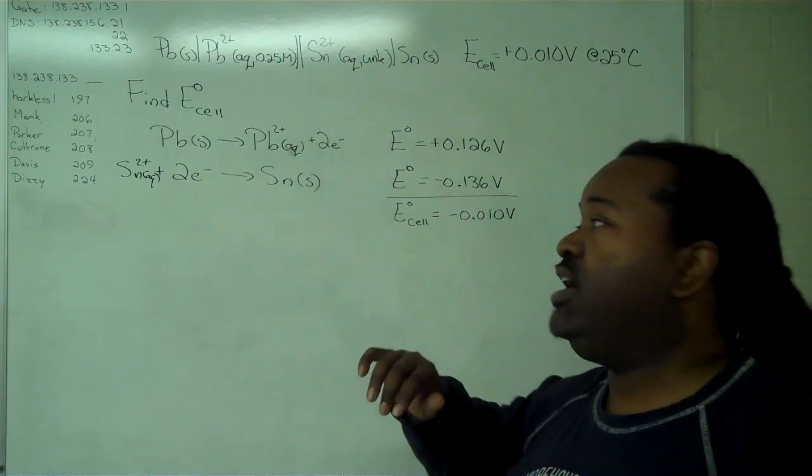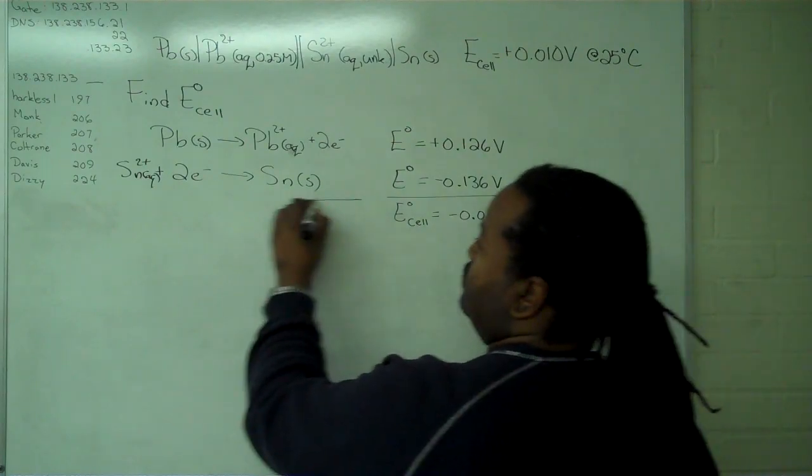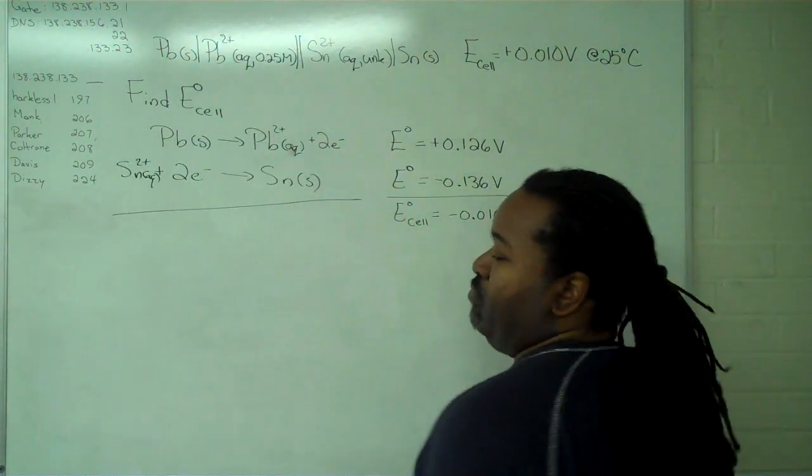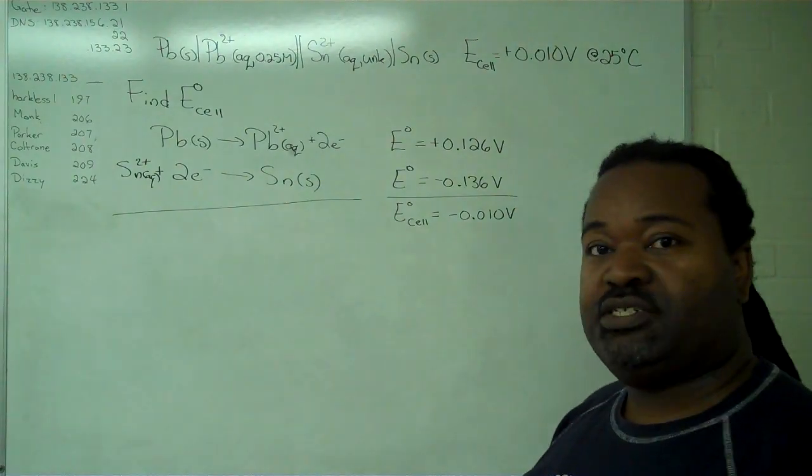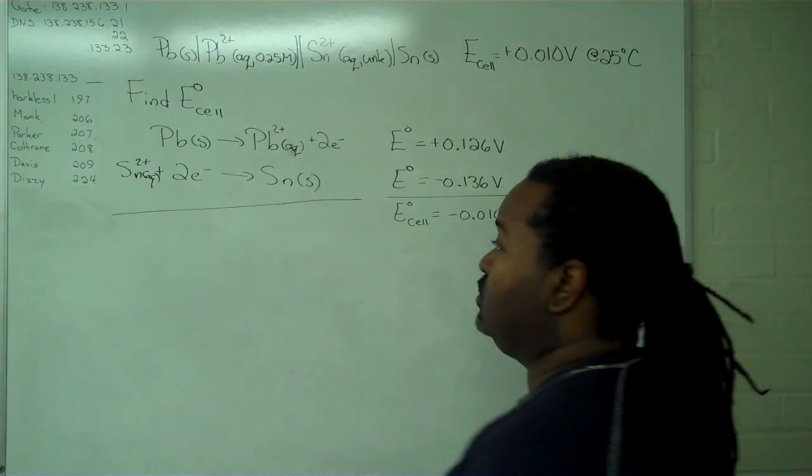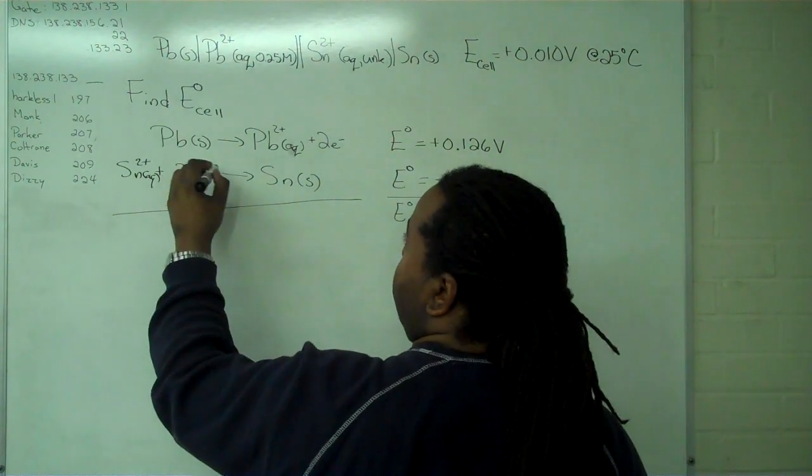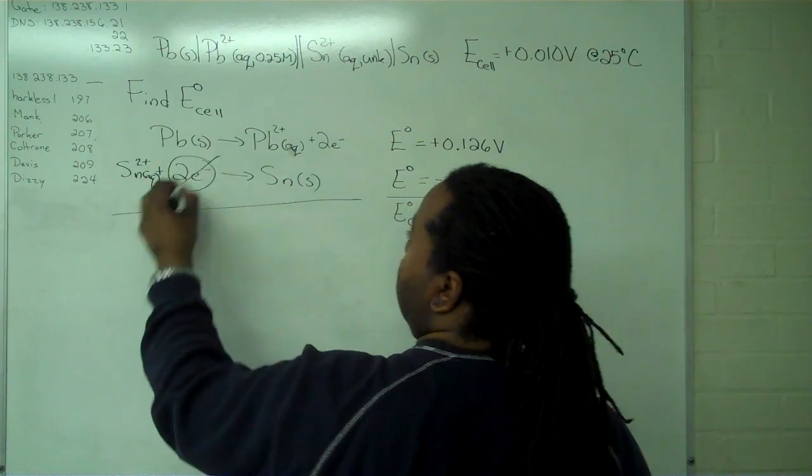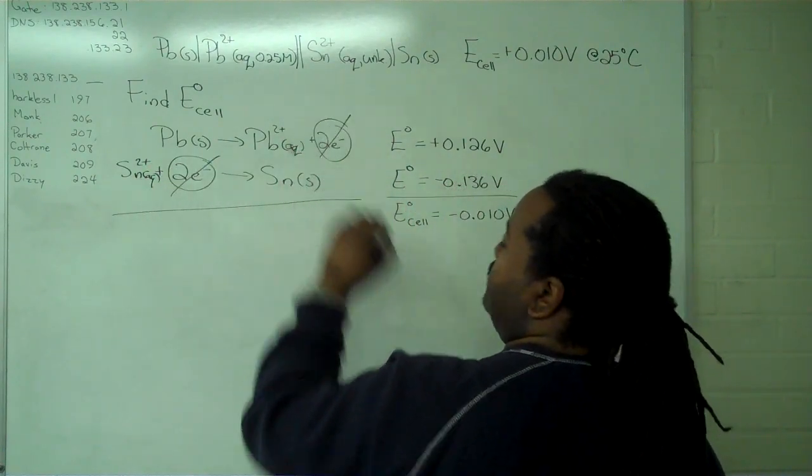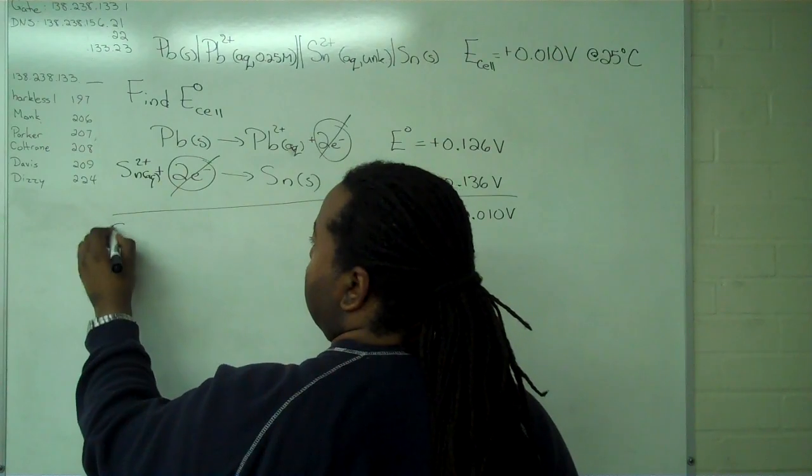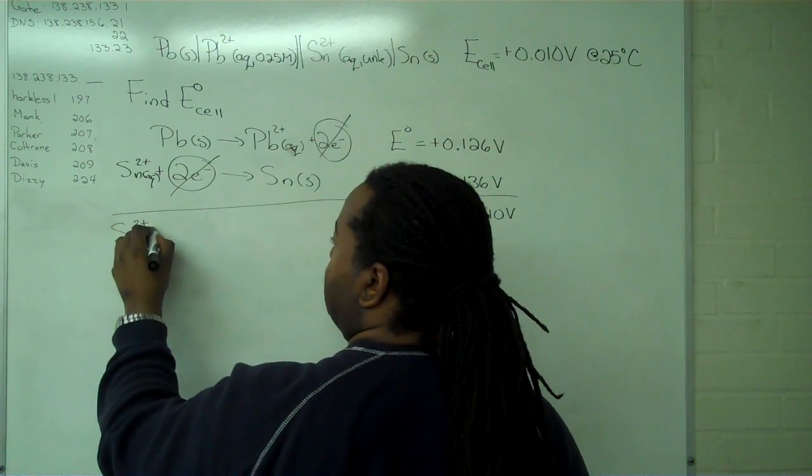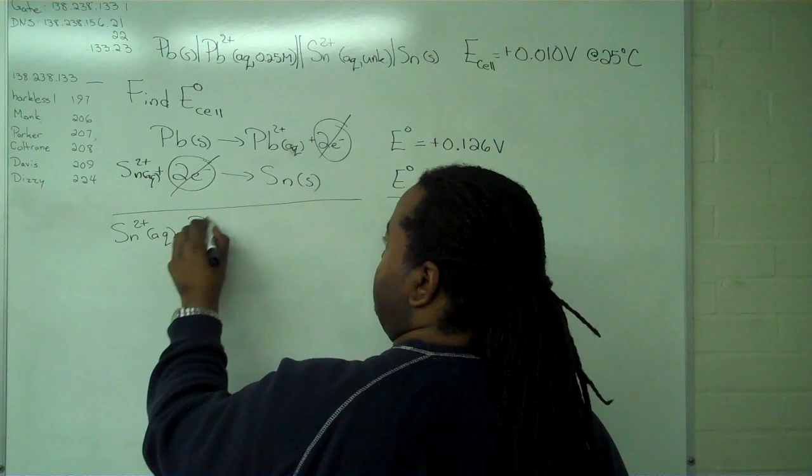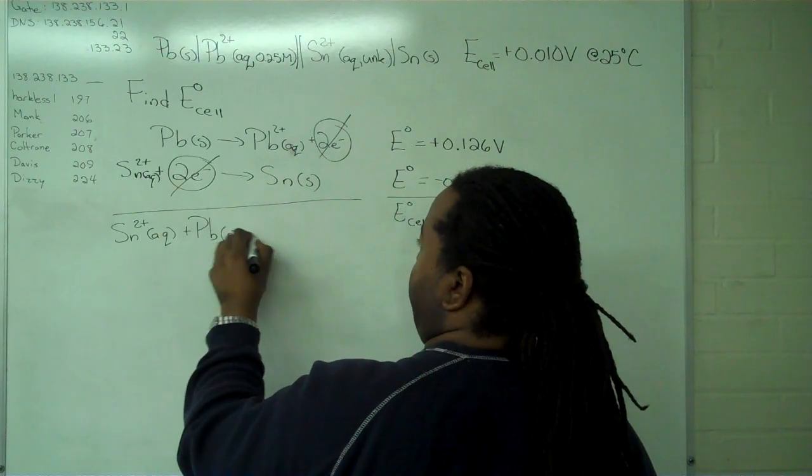Now that we've found E cell standard, the next step is to combine these to get our overall reaction so we can have an expression for Q. This is fairly straightforward—we just eliminate the two electrons and carry through writing everything out.